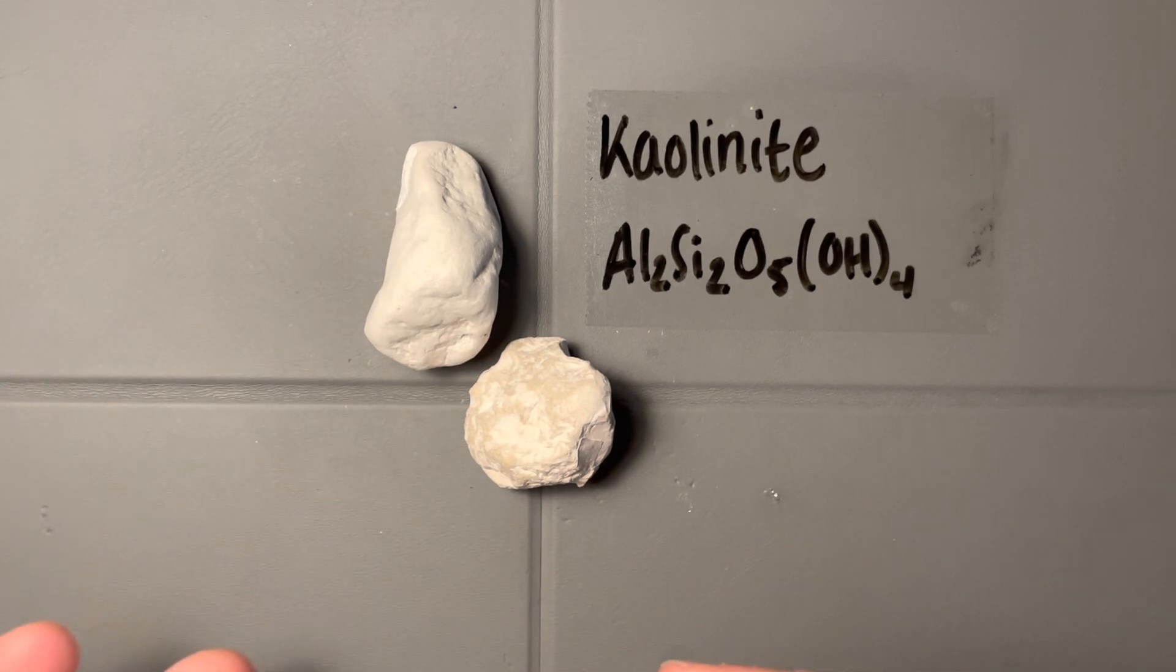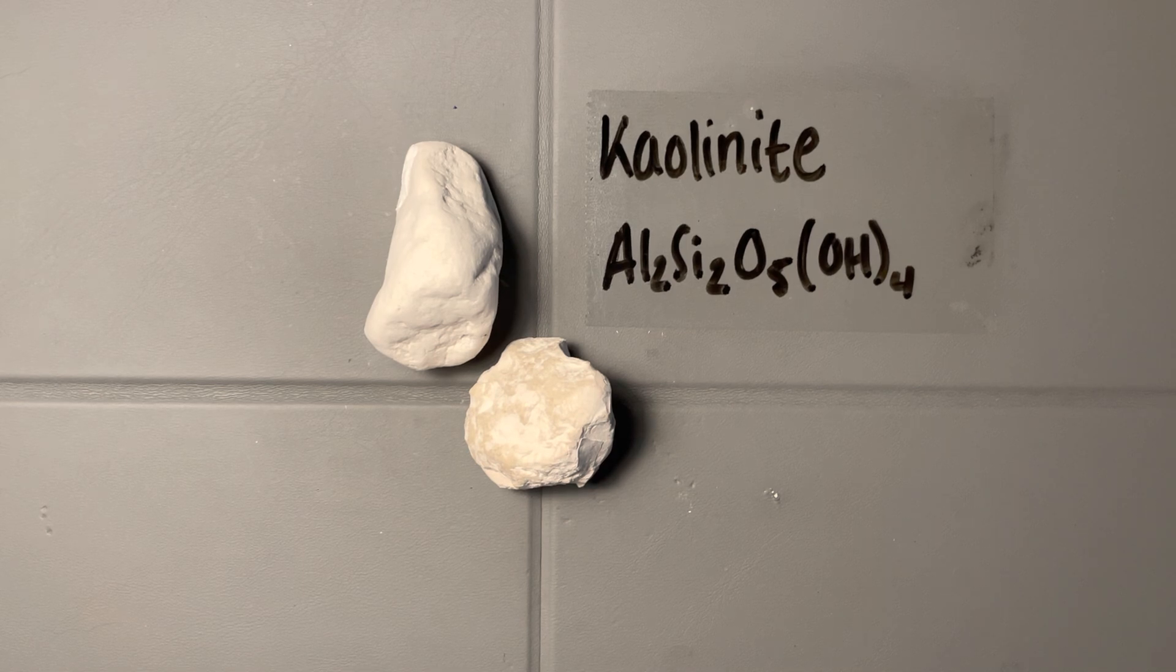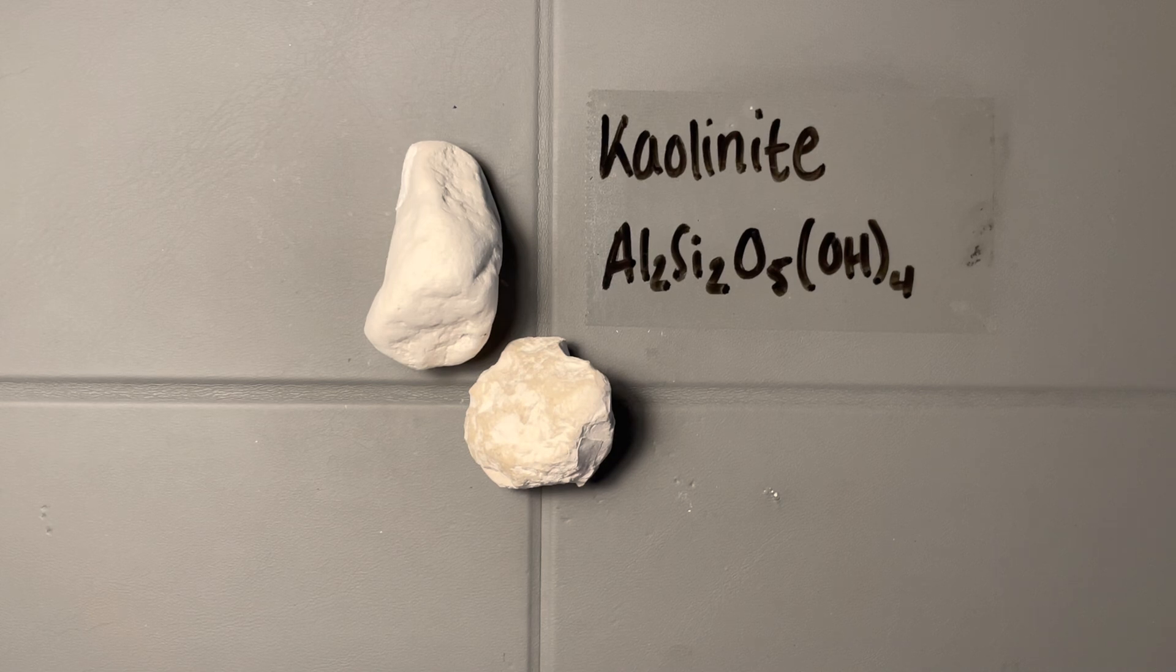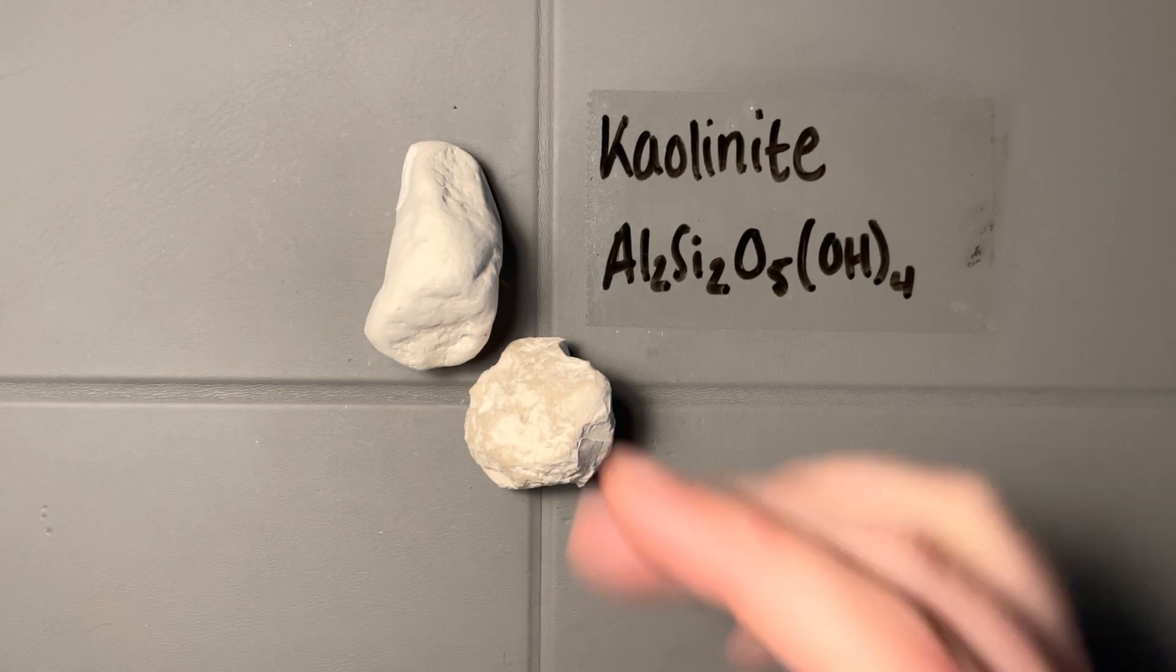So the first thing you should see when you see a chunk of kaolinite is the fact that it has an earthy luster. Now, if we think to something like biotite, muscovite, or serpentine, all of those had these kind of bright, shiny lusters, even if it was just the shininess of the fibers in serpentine.